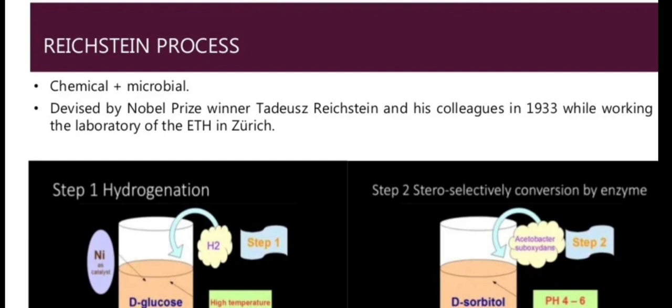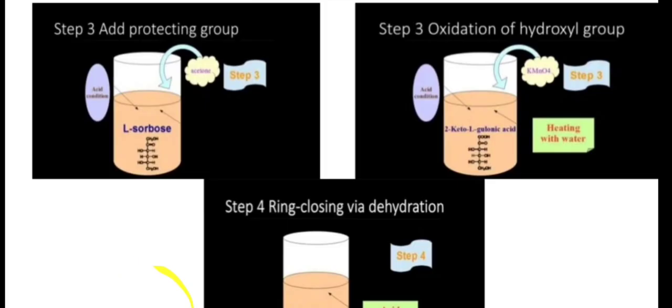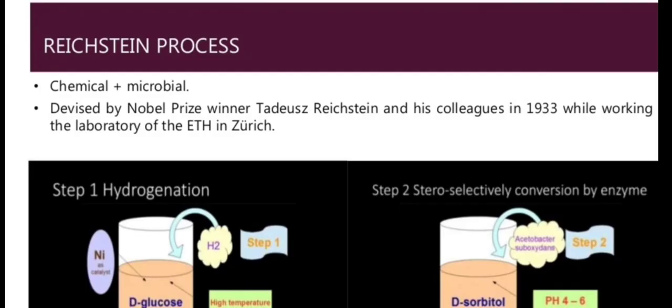The first step of the Reichstein process is hydrogenation, where hydrogen is added. The second step is conversion by enzyme. When hydrogenation is performed, the compound is converted from glucose to sorbitol using Acetobacter suboxydans.